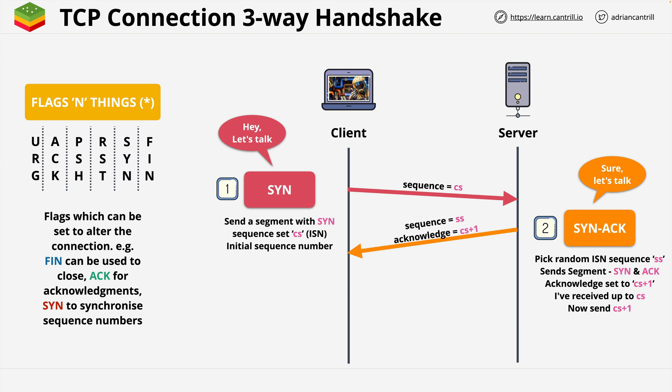The server picks its sequence number randomly, just like the client. To acknowledge it has received all communications from the client, it takes the client sequence number from the previous segment and adds one, setting the acknowledgement field to CS plus one. This informs the client that it received all the previous transmission — CS — and wants it to send the next part of the data, CS plus one. So it sends this segment back to the client with its own server sequence SS and the incremented client sequence. This type of segment is known as a SYN-ACK.